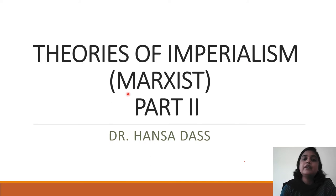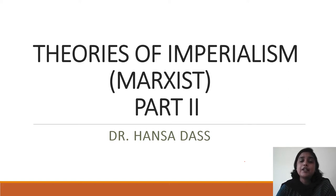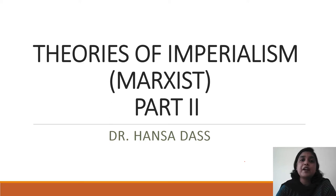Before beginning with what the Marxist theories of imperialism are about, we need to see who the main protagonists are — the main historians who developed the classical Marxist theory. Classical Marxist theory became popular in the first two decades of the 20th century. In the video on liberal theories of imperialism, we had talked about Hobson, Schumpeter, Charles Conant, Max Weber, and Thorstein Veblen, and how they established the link between capitalism and imperialism.